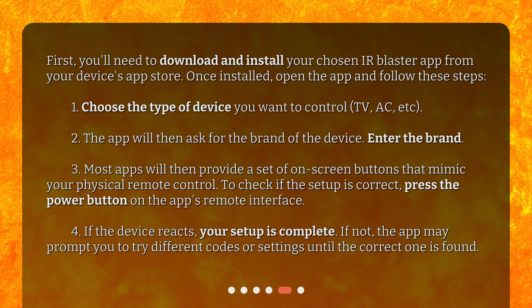Most apps will then provide a set of on-screen buttons that mimic your physical remote control. To check if the setup is correct, press the power button on the app's remote interface. If the device reacts, your setup is complete. If not, the app may prompt you to try different codes or settings until the correct one is found.